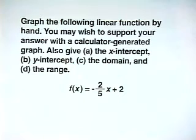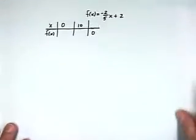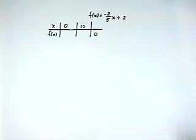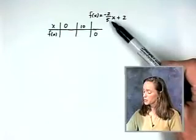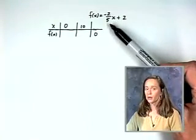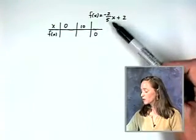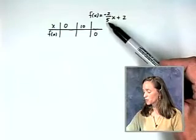As we work this problem, we're going to give the x-intercept, y-intercept, domain, and range of the function. As I mentioned, we need three points in order to graph a linear function. We can choose any values we like. When the coefficient of x is a fraction, it's to our advantage to choose numbers that are divisible by the denominator of the fraction.